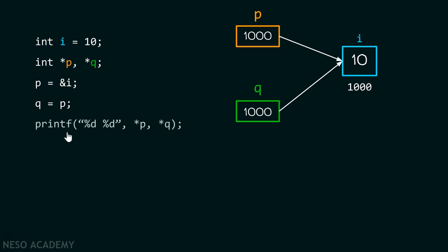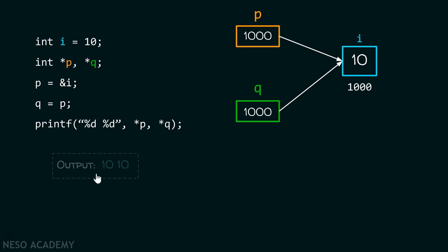With the help of this printf function, we can print the content which is stored in this location 1000. With the help of star p, we can print the content which is stored at this address 1000, and we can see 10 is stored there. Similarly, with the help of star q, we can again print the value 10. Therefore, the output of this program is 10 10.